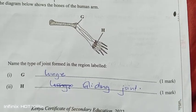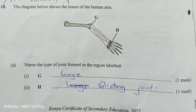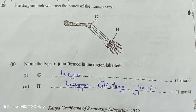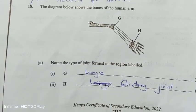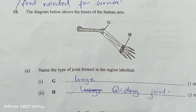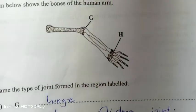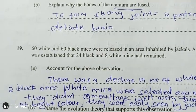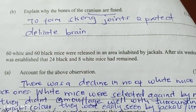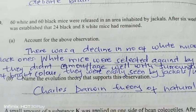The diagram shows the bones of the human arm. Name the joint found in regions G and H. Region G is the hinge joint, and region H is the gliding joint in the wrist. Explain why the bones of the cranium are fused — this is to form strong joints to protect the delicate brain.